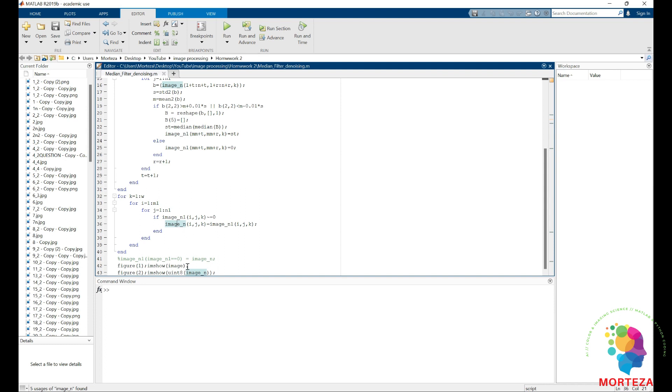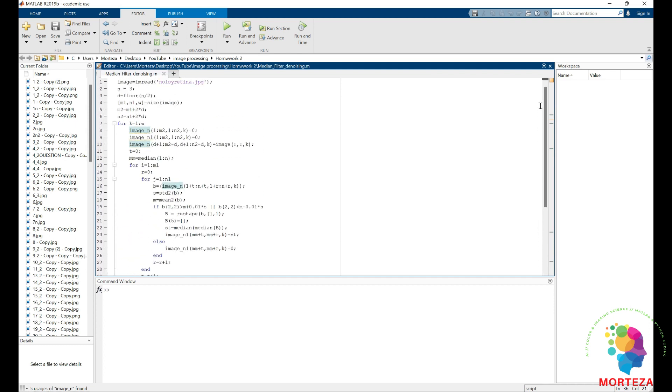So as you can see, and then you would show the images. And that's the simple way to code this problem and to just keep your image sharp as well as denoised.